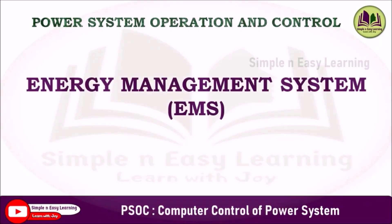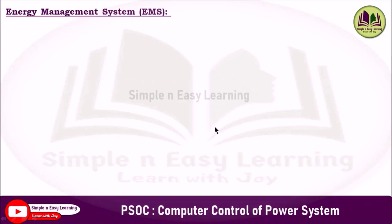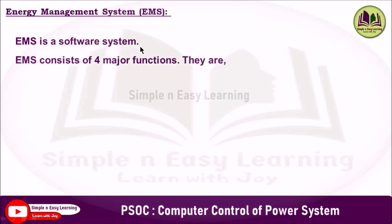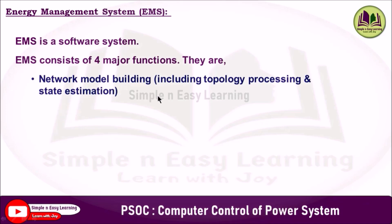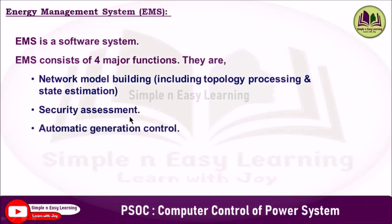In power system operation control, today we are going to discuss about energy management system. Energy management system EMS is a software system. It consists of four major functions: network model building, including network topology processing and state estimation; security assessment; automatic generation control; and economic dispatch.